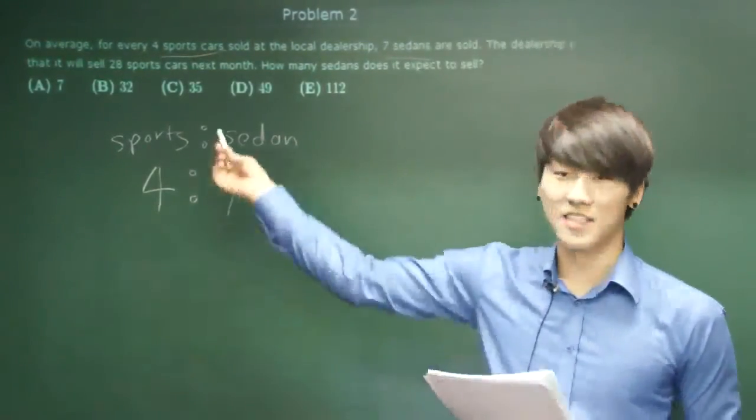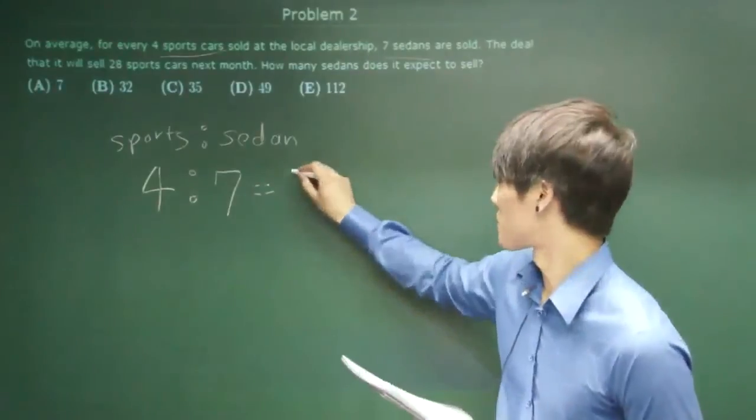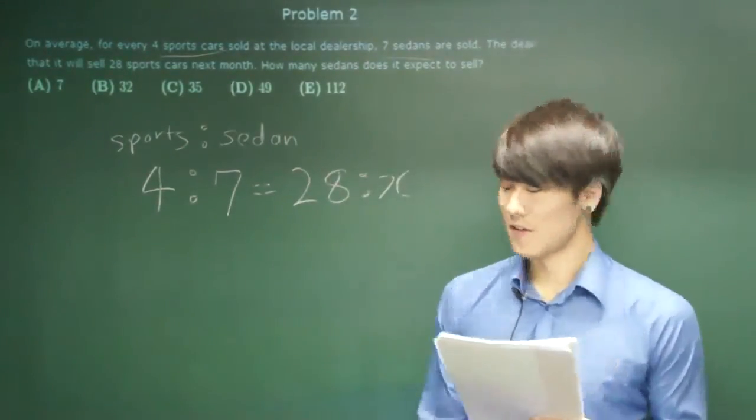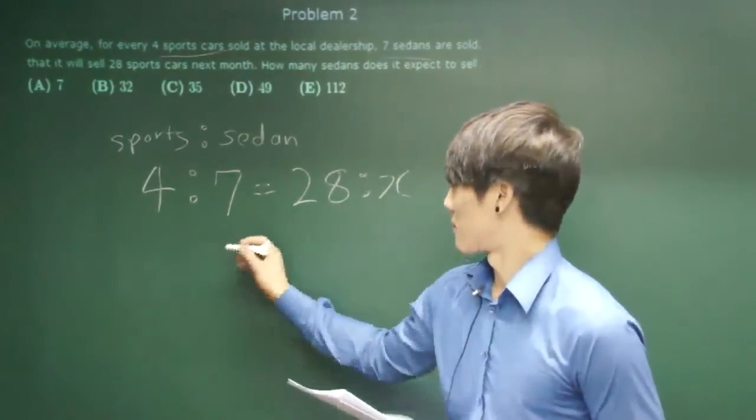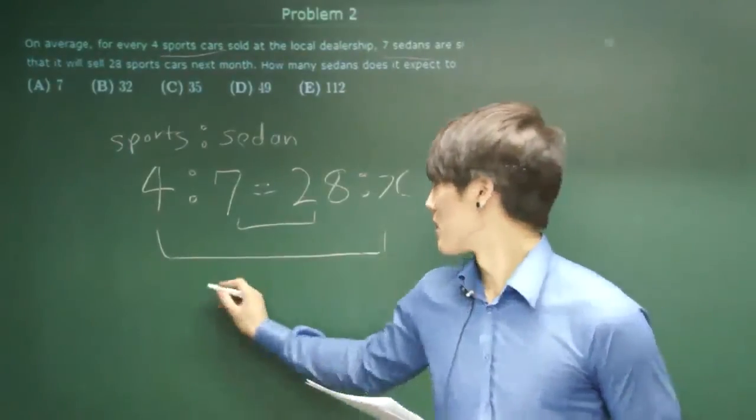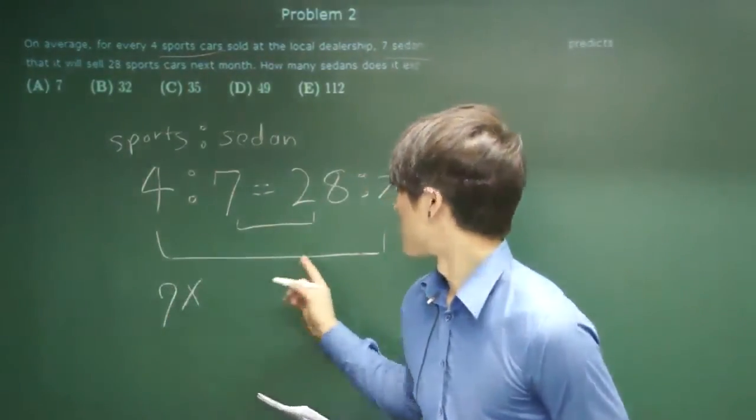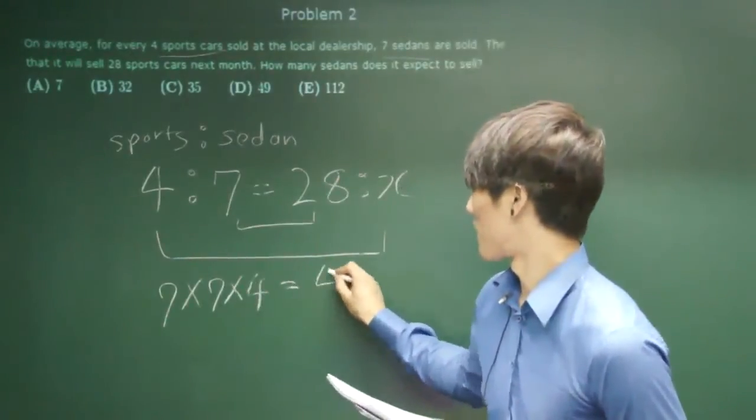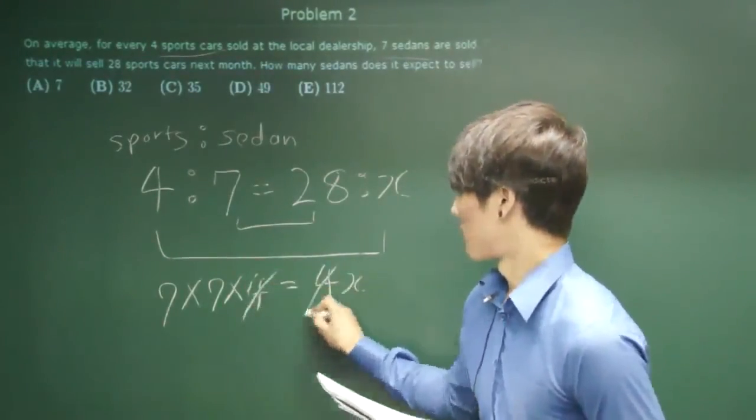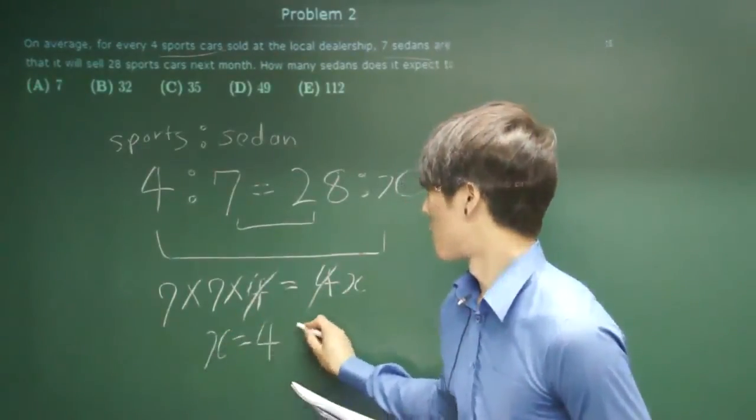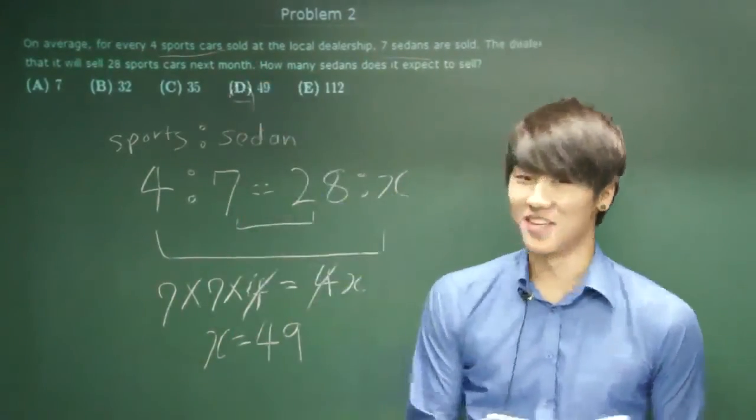And this month they sold 28 sports cars. How many sedans will they sell? So all you have to do is multiply these two and make it equal to the outside parts. 28 is 7 times 4 equals 4X. 4 cancels out. X equals 49. Choice D.